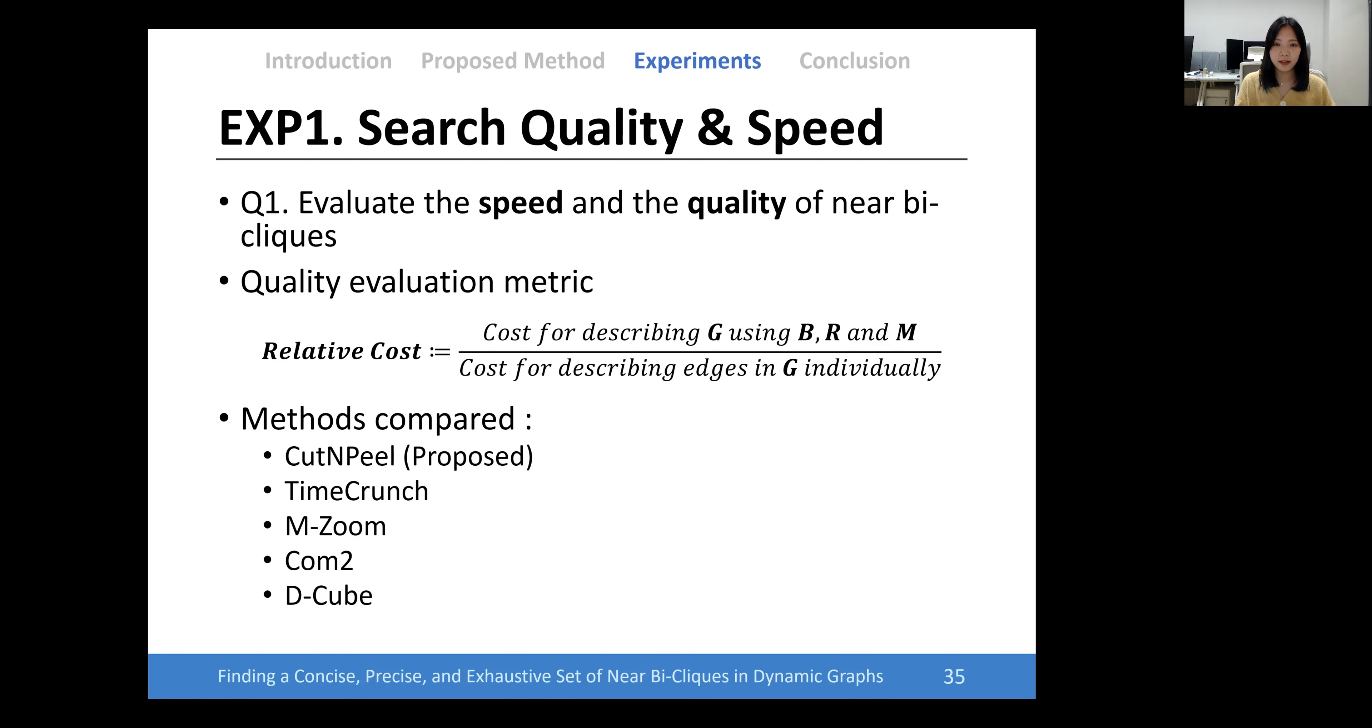First, we evaluated the speed and quality of detected near bi-cliques on six real-world datasets. The evaluation metric is defined as the ratio between the code for describing the given graph with and without B, R, and M. We compared sets of near bi-cliques detected using five different methods.